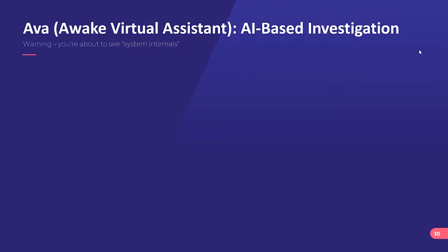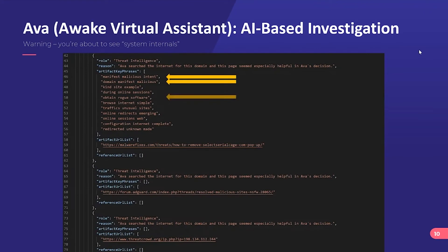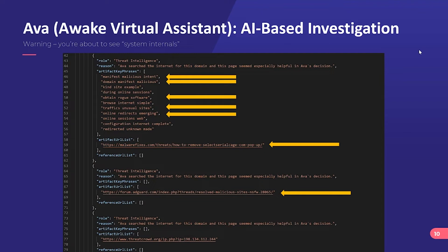I'm going to show you some system internals — some JSON-formatted data — this is the under-the-hood stuff. The question is what does AVA, our AI-based investigative assistant, think about that domain? AVA does a number of things including searching VirusTotal and other sources to see if it's known bad — but if it's not known bad, that doesn't mean it's good. So AVA does further digging, going out and doing an internet search just like we did as humans.